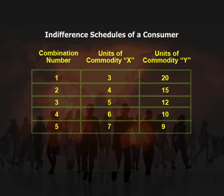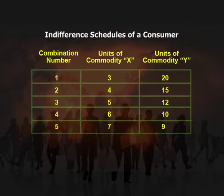In this indifference schedule, a consumer will be indifferent to combinations 1, 2, 3, 4, and 5 because each combination provides an equal amount of satisfaction. This is an example of one such indifference schedule, and any number of such schedules can be made which may represent a higher or lower level of satisfaction to the consumer.